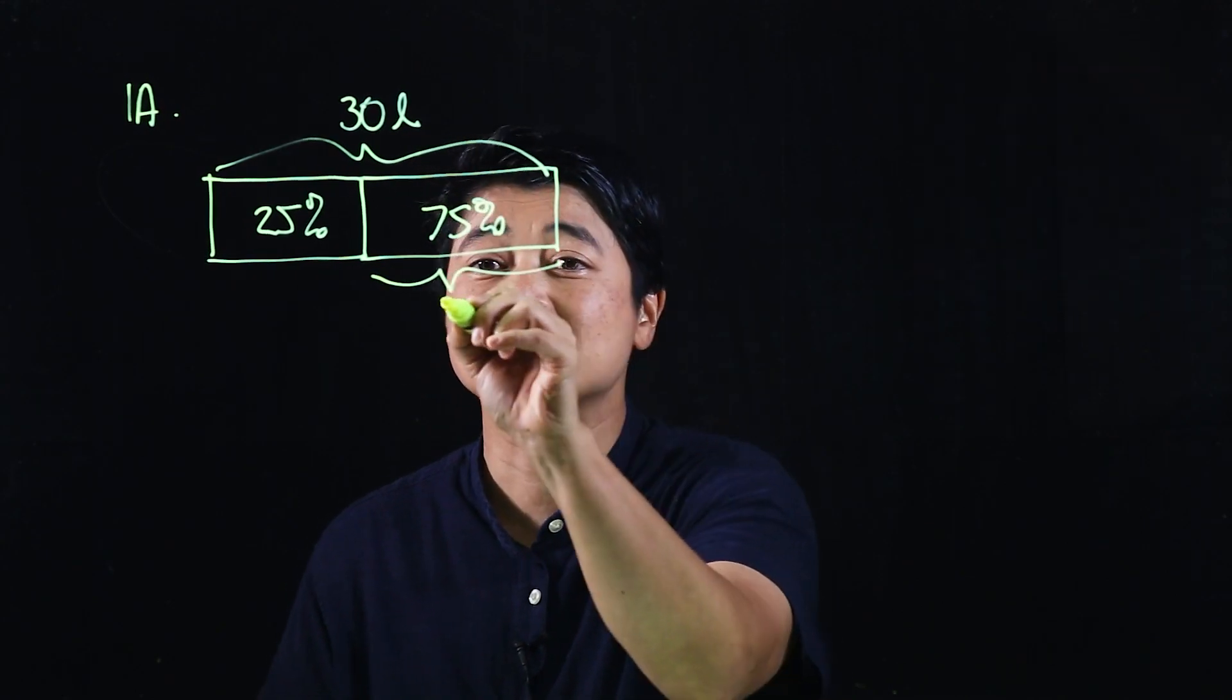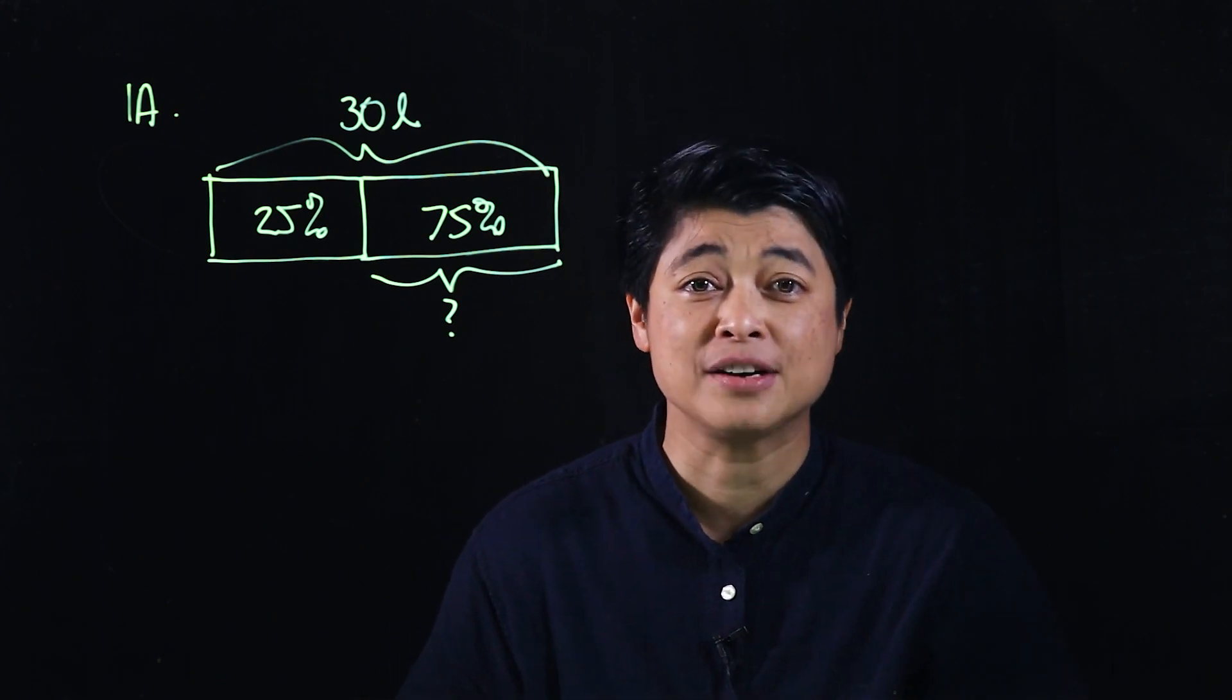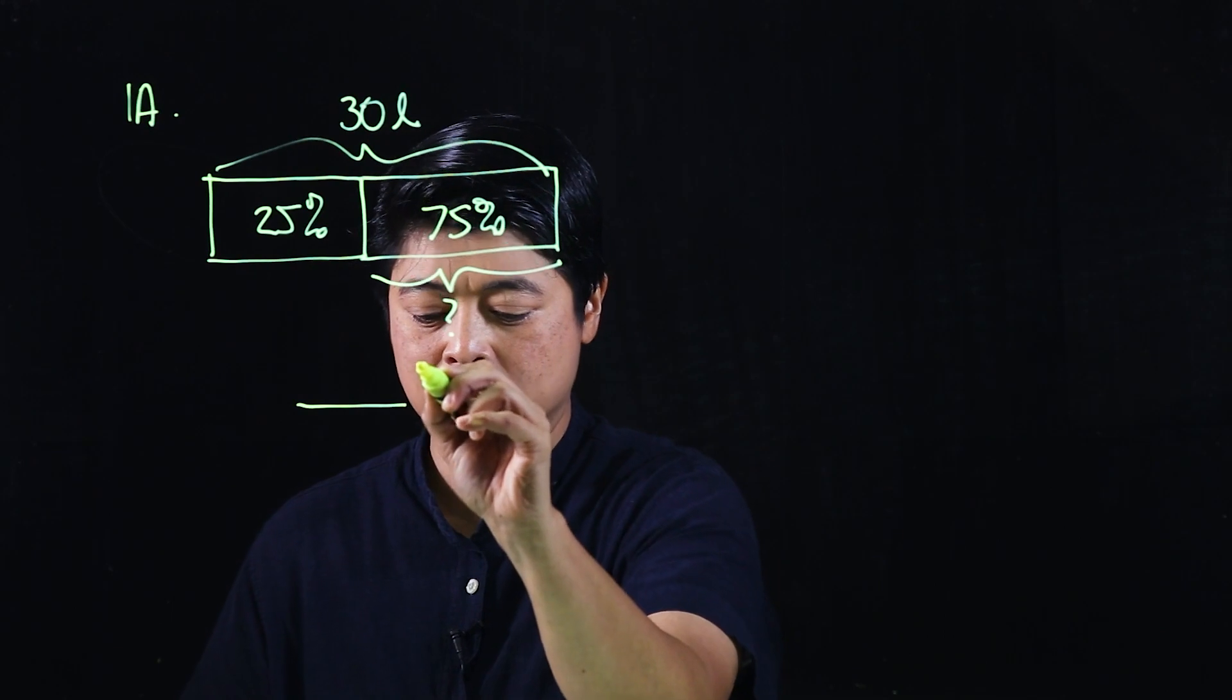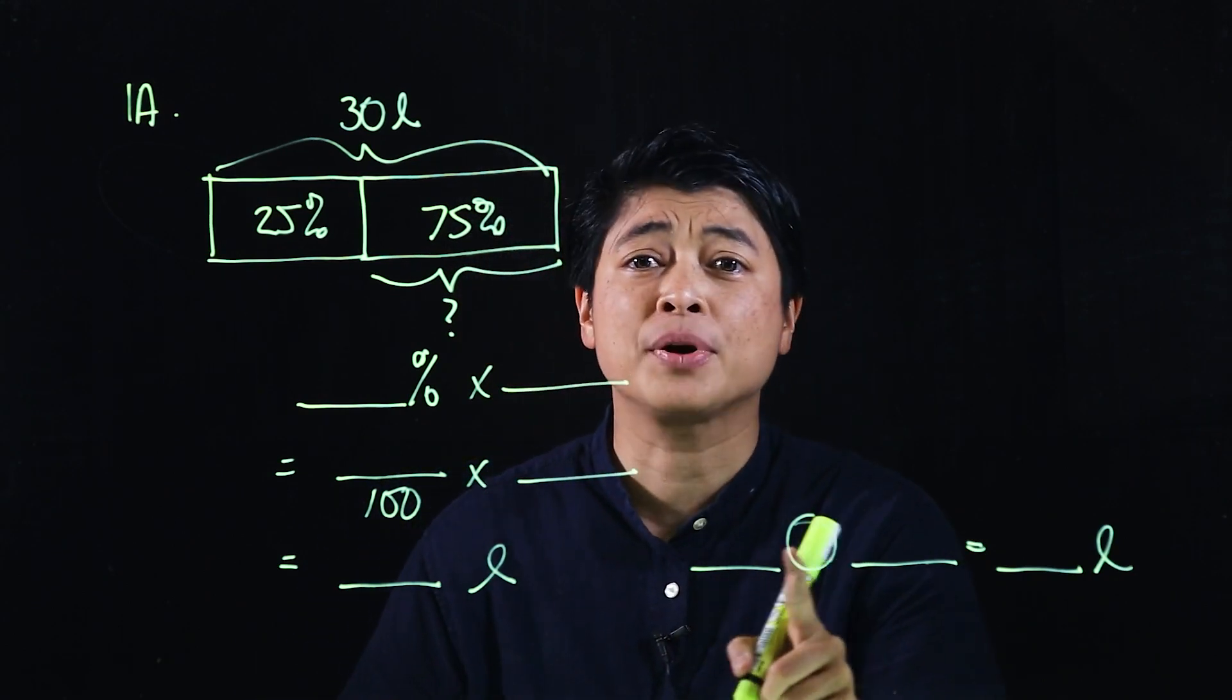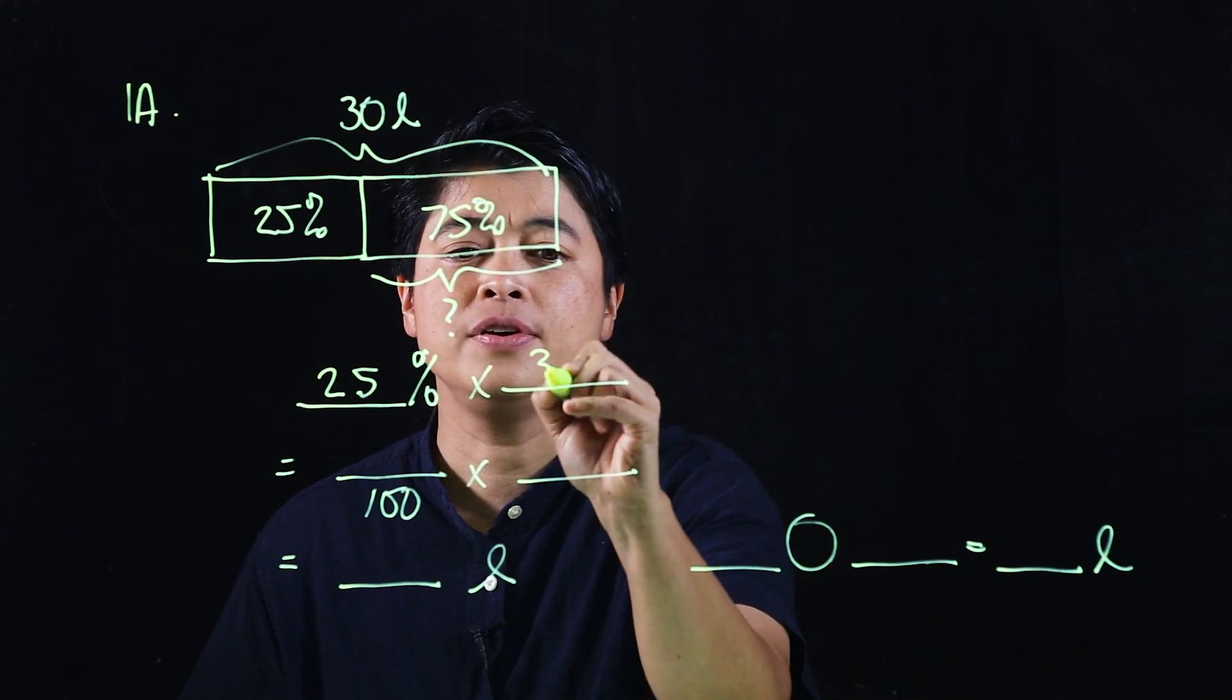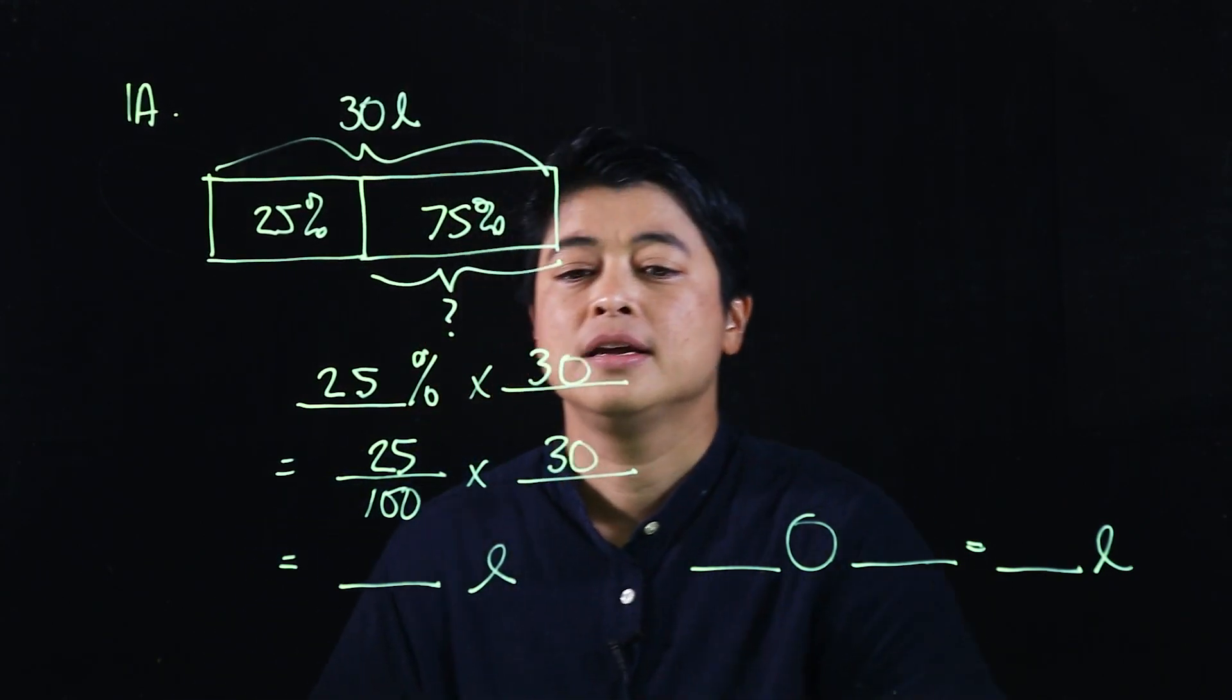The question is how much more water is needed to fill. We will do the book approach and then the Michelle approach, and you can compare which one is easier. The book approach says blank percent times blank. Clearly, since there's a second operation, they took the 25 percent. That means 25 percent of 30 liters. Then 25 over 100, and this is 30, so this is over one.